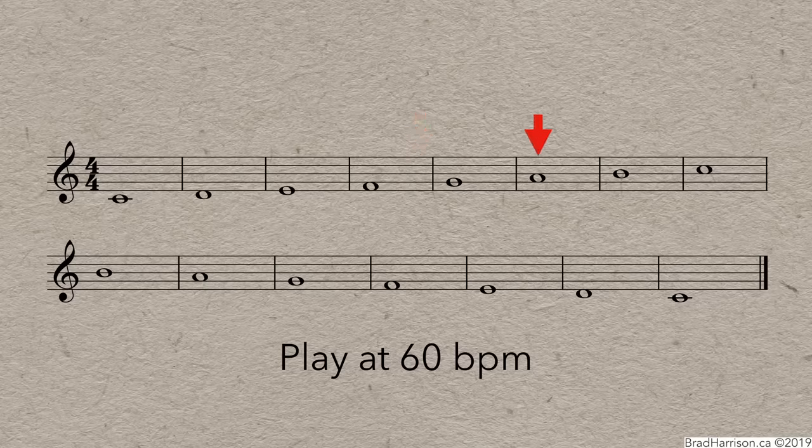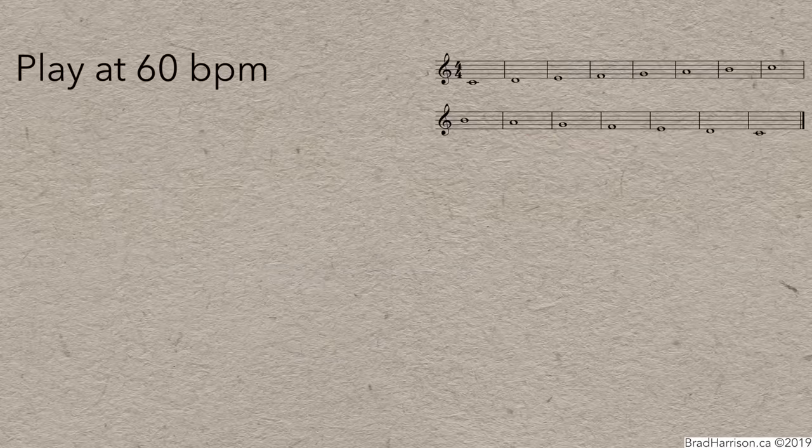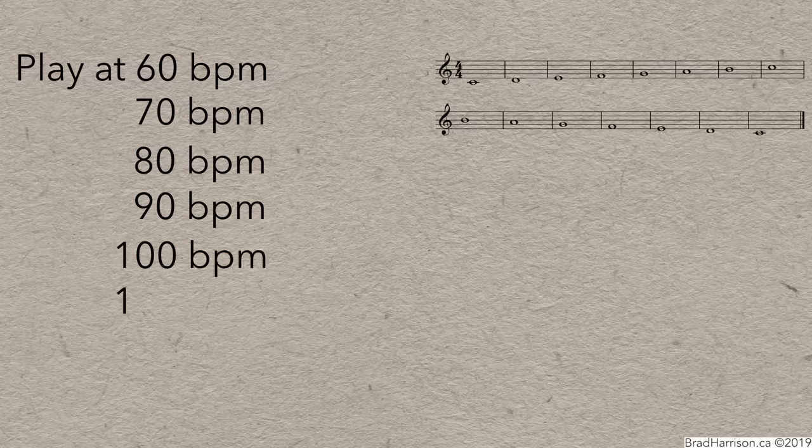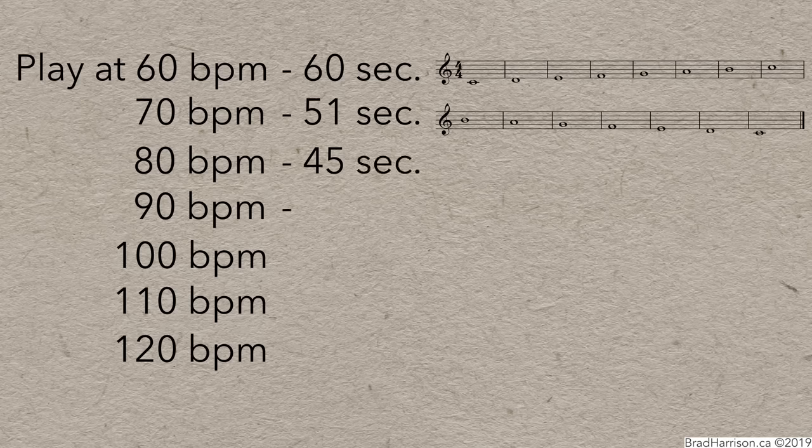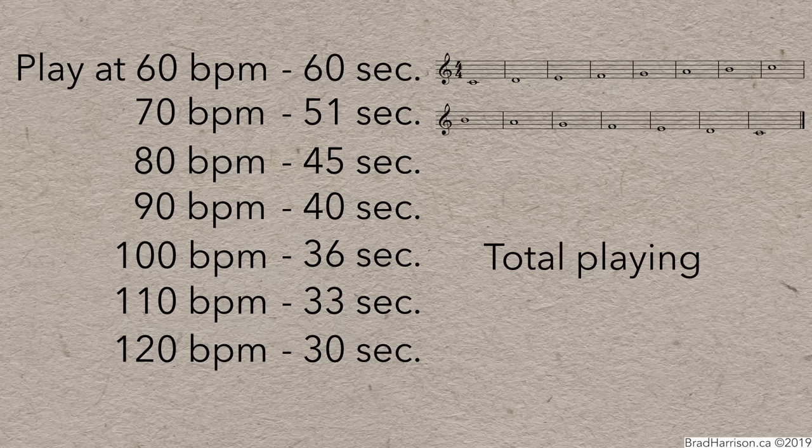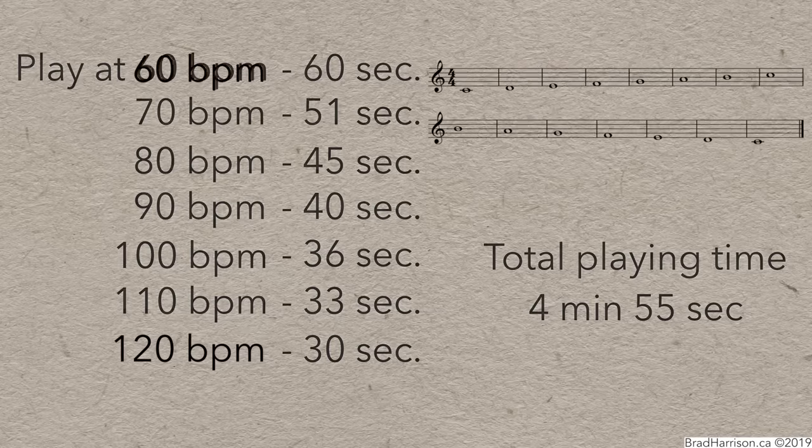Now, play that scale six more times in whole notes, but increase the tempo by 10 beats per minute each time until you get to 120 beats per minute. Note that each iteration takes a bit less time to play. By the time you complete all seven exercises, you've doubled your tempo and the whole process takes less than five minutes. It was slow and deliberate and maybe not super exciting, but it laid the foundation of familiarity to build your technique and muscle memory.